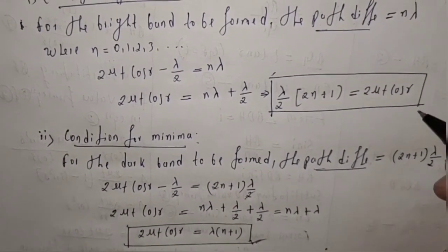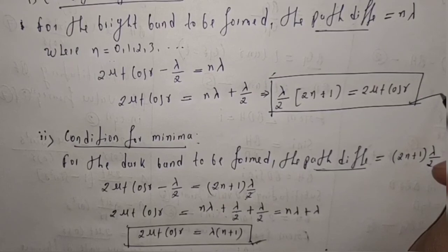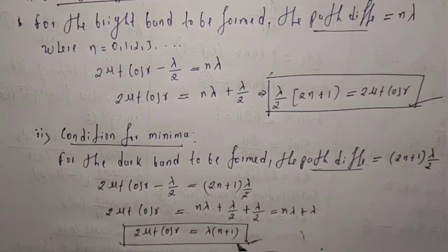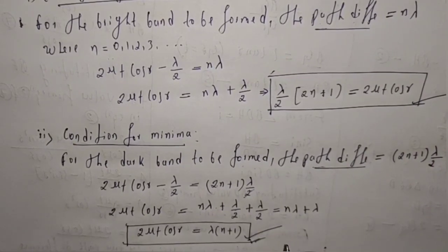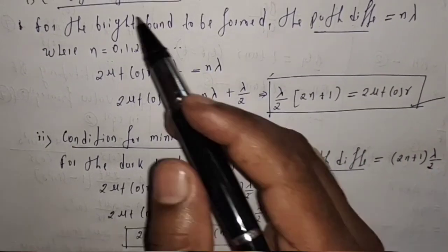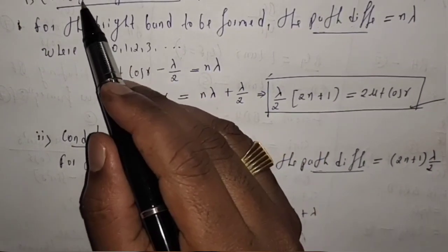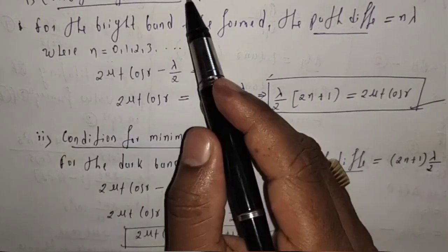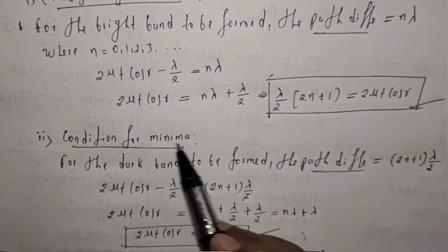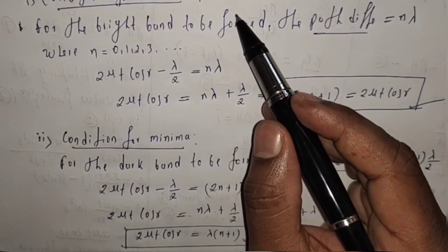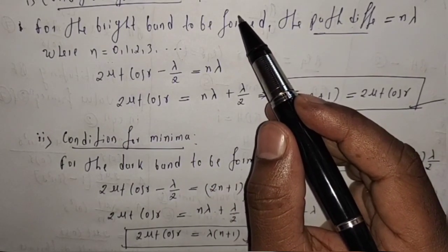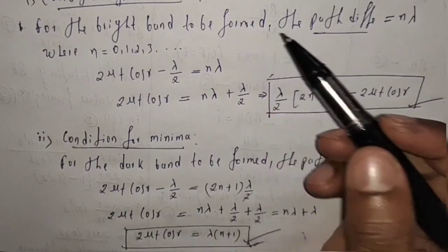So, 2mu·t·cos R equals (2n+1)·lambda/2 is the condition for maxima, and 2mu·t·cos R equals n·lambda is the condition for minima. These are the conditions for maxima and minima in the case of reflected light in thin films.